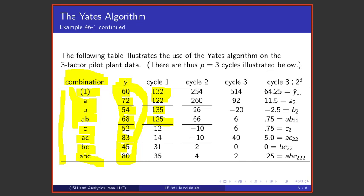Now I do subtractions, and here's the only place that you can really get confused or messed up. One wants to do subtractions, subtracting the top value in a pair from the bottom. So 72 minus 60 is 12, 68 minus 54 is 14, 83 minus 52 is 31, 80 minus 45 is 35. That is cycle one of the Yates algorithm for a three-factor study.